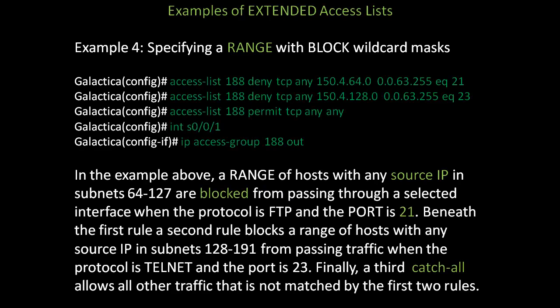In this fourth example, we're going to specify a range of addresses with a wildcard mask. In global configuration mode, use access-list — a number between 100 and 199, in this example 188 — deny, protocol TCP. Specify the source as any, and specify an entire range of destination addresses. We match 150.4 — the network part of a class B address exactly — since the mask is 0.0. In the third octet, we use a block value of 64 with the first network at 64, so we subtract 1 for a mask of 63. The last mask value of 255 specifies any host in that subnet. Finally, specify port 21 for FTP.